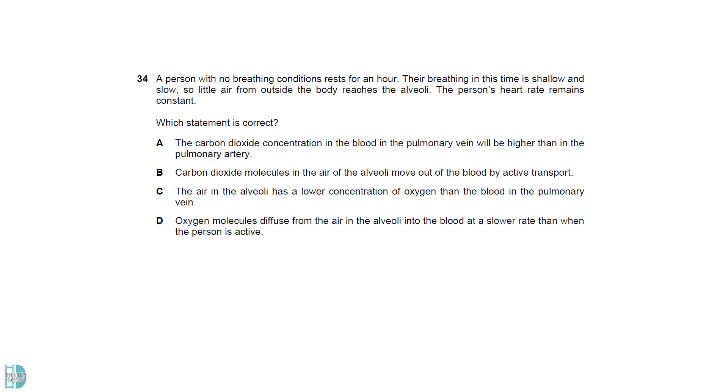When our breathing rate is low, oxygen diffuses into our blood more slowly. So D is a correct statement. A is wrong as the carbon dioxide concentration in the pulmonary artery will always be higher. This allows the diffusion of carbon dioxide from our blood to the alveolar space near the lungs. B is incorrect as carbon dioxide moves by diffusion. C is wrong because, in a normal circumstance, the air in alveoli always has a higher oxygen concentration. So it will diffuse into our blood.